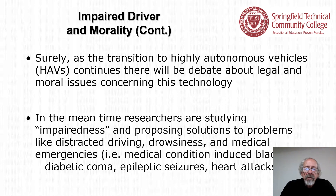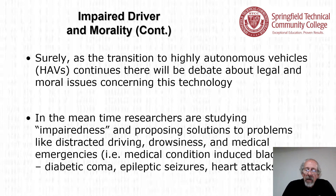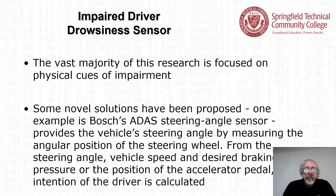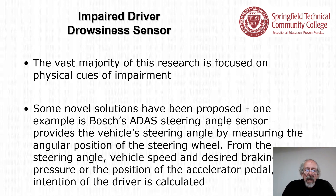Researchers are studying impairedness and proposing solutions to problems like distracted driving, drowsiness, and medical emergencies such as diabetic coma, epileptic seizures, and heart attacks. Many crashes occur for no apparent reason — often medical emergencies that cause a person to drift off the highway. The vast majority of research is focused on physical clues of impairment. One example is Bosch's ADAS steering angle sensor, which measures the angular position of the steering wheel. From the steering angle, vehicle speed, desired braking pressure, and accelerator pedal position, the driver's intention is calculated — you might call this AI or ML.